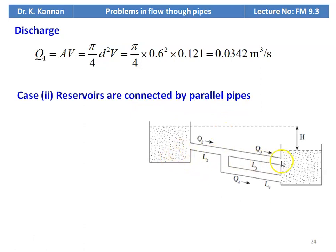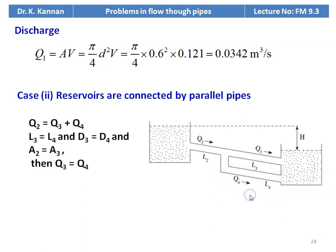Now the single pipe is replaced by a parallel pipe in the second half. The parameters are: Q2 is the flow in the first half of the main pipe with length L2; Q3 is the discharge in the second half of the main pipe with length L3; Q4 is the discharge in the branch parallel pipe of length L4. The conditions are: Q2 = Q3 + Q4; L2 + L3 = 1500; L3 = L4.